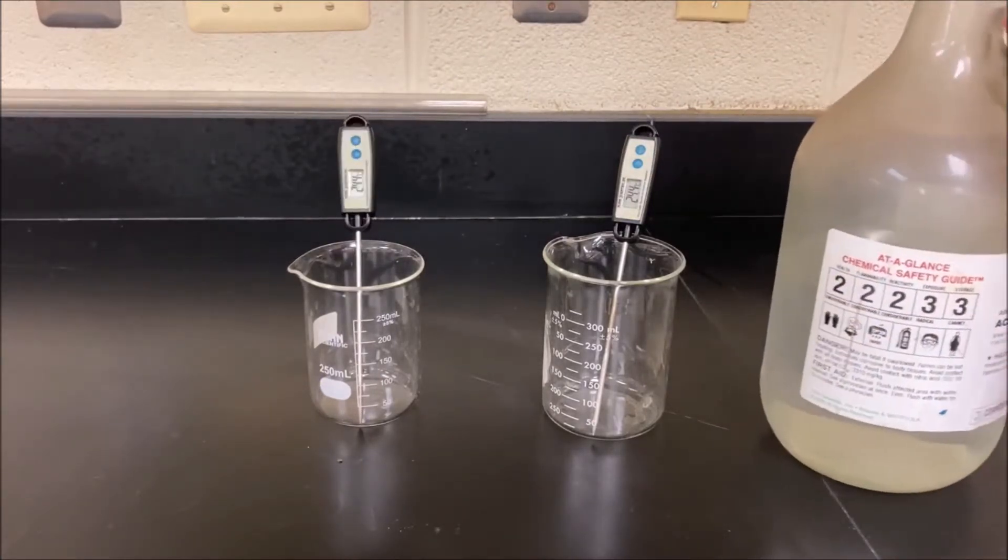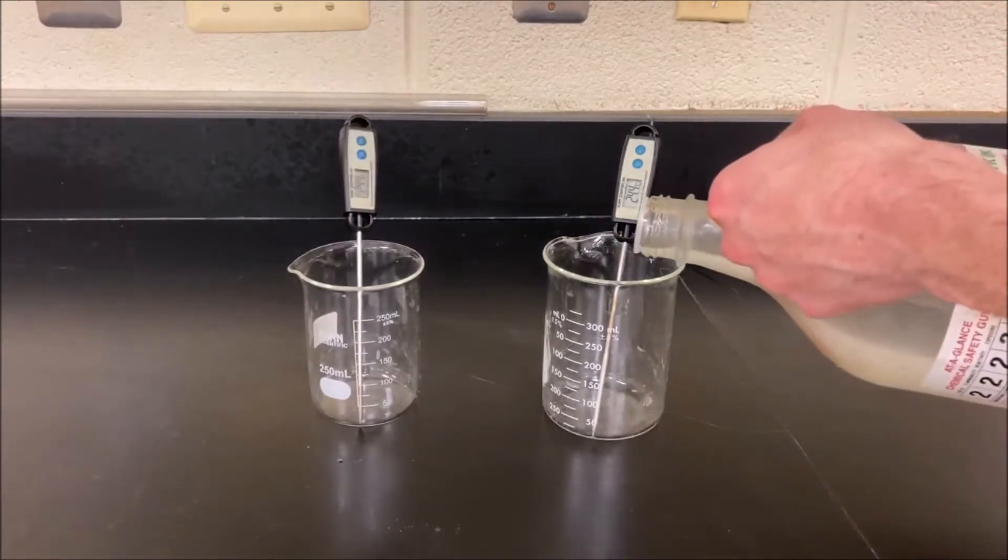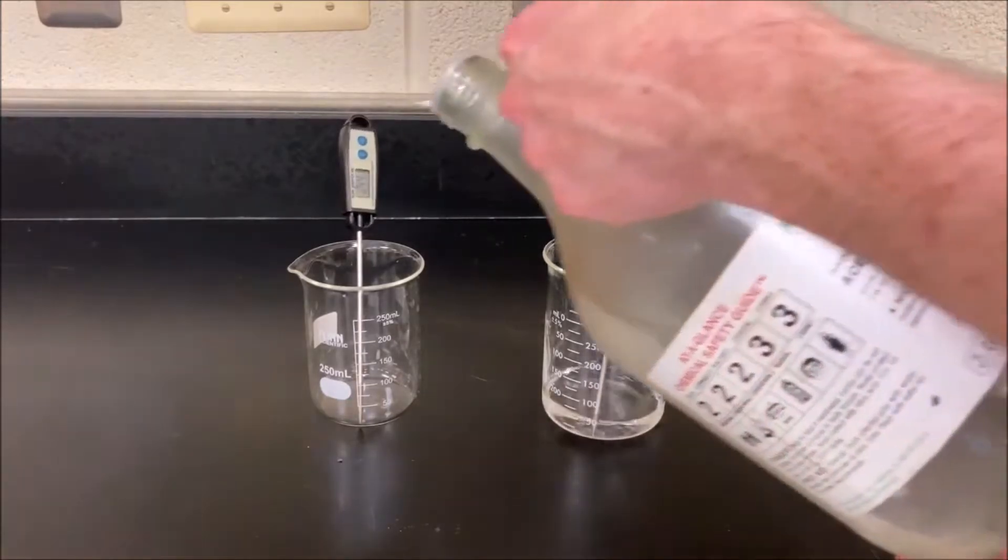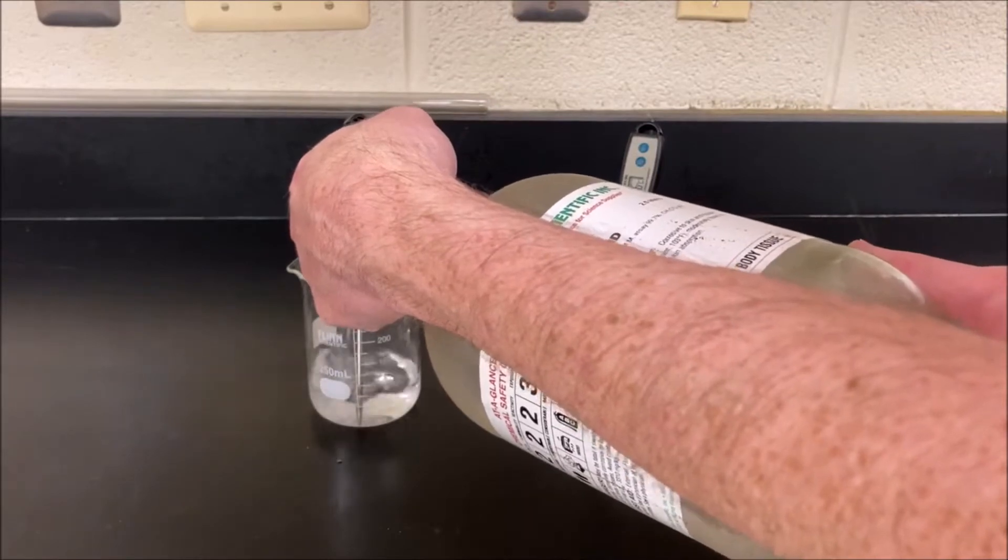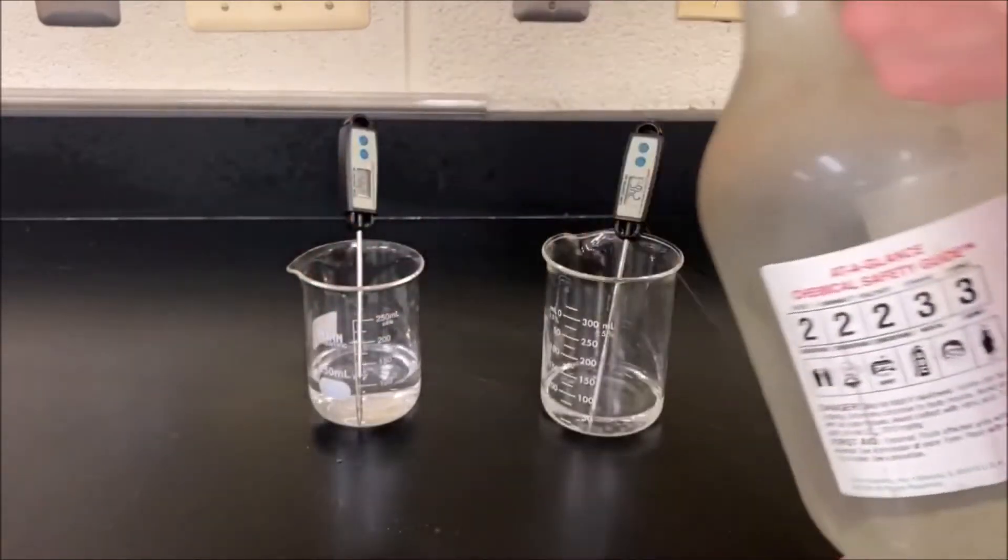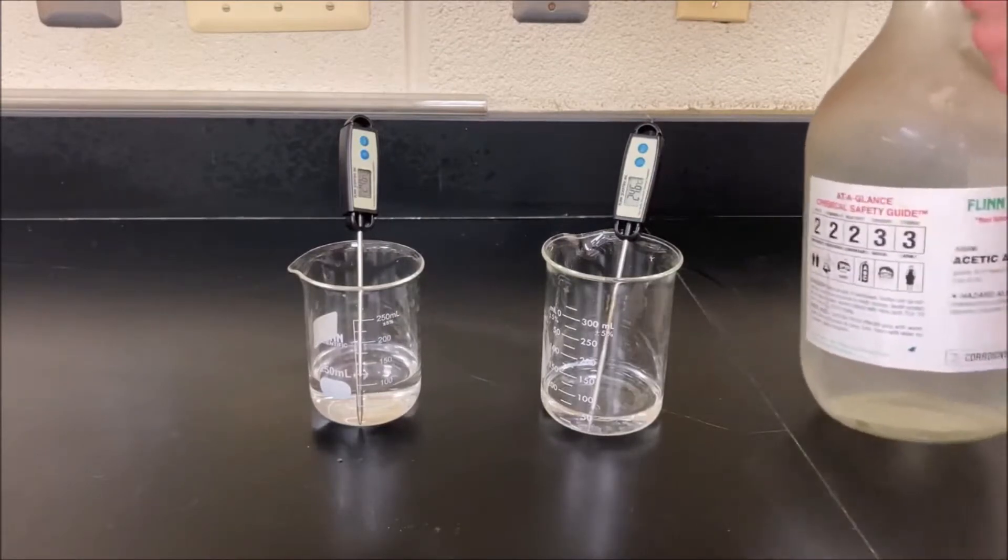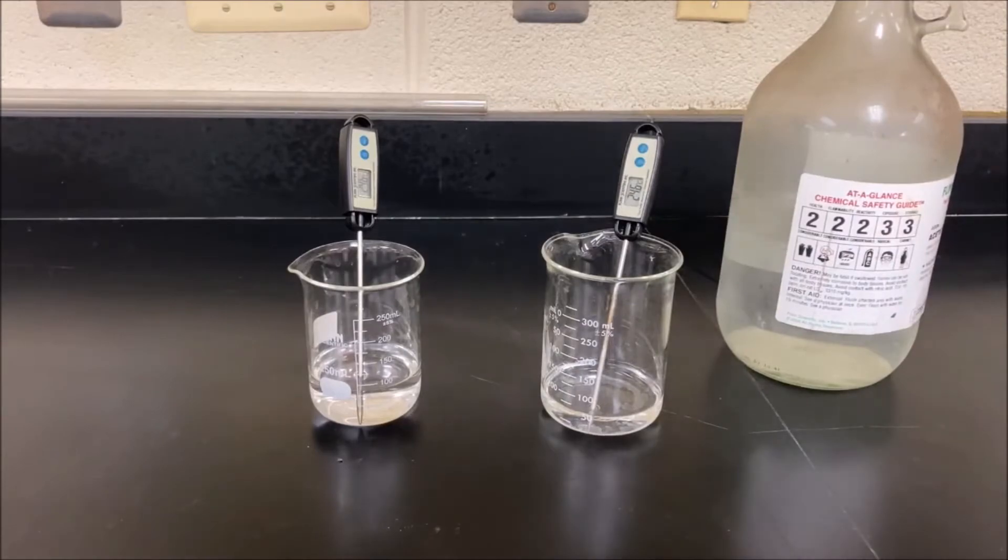So what we're going to do here is we're going to pour some of this into these two beakers and place these in the fridge and freezer. Let's see if we can get this to freeze and then we're going to look at what happens when it melts and what happens when we take frozen glacial acetic acid and mix it with some baking soda solution.